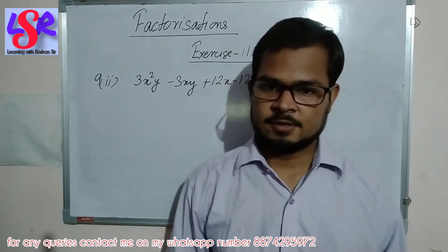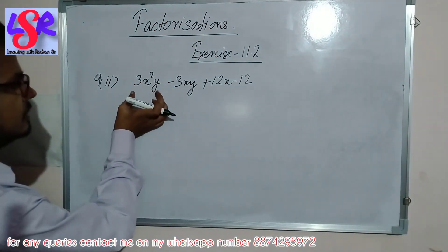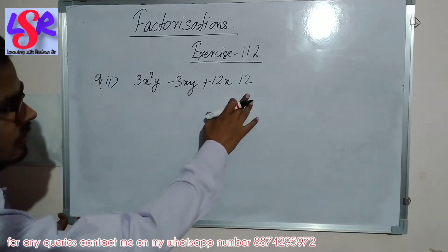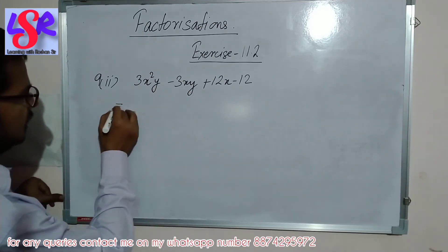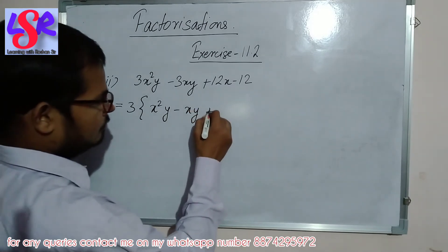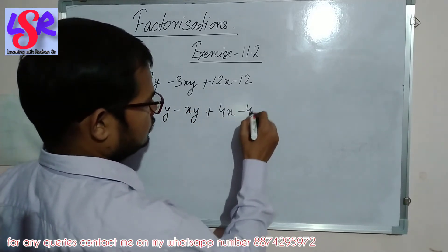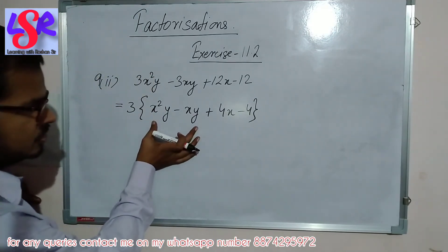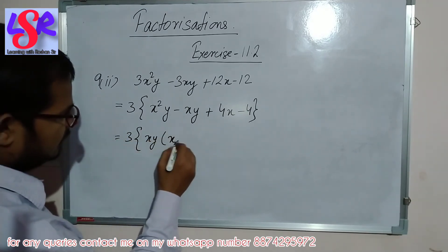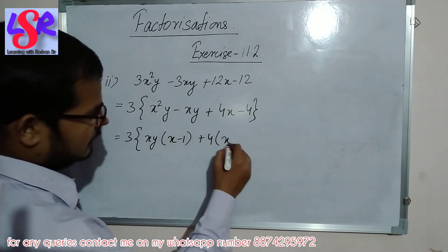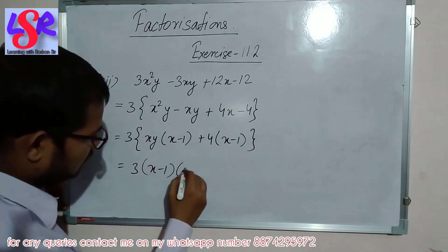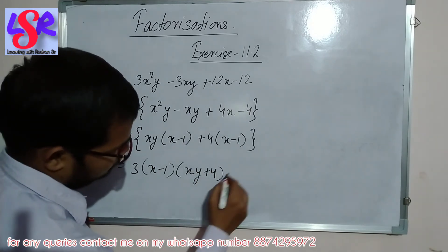Question number 9, second part — here we are having 3x squared y minus 3xy plus 12x minus 12. Since 3, 3, 12, and 12 are all in the table of 3, we first take 3 as common to get x squared y minus xy plus 4x minus 4. From the first two we take xy as common, leaving x minus 1. From the last two we take 4 as common, leaving x minus 1. Taking (x minus 1) as common, the answer is 3(x minus 1)(xy plus 4).